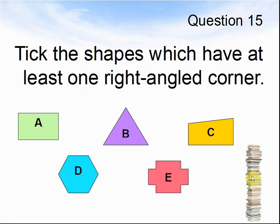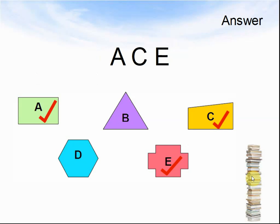Question 15. Tick the shapes which have at least one right-angled corner. Pause the video until you are ready for the answer. The correct answers were C and E — a rectangle and one other shape.